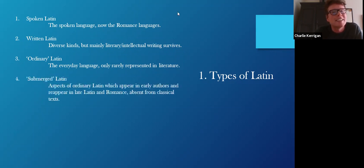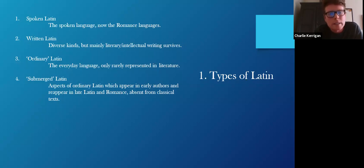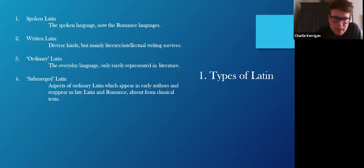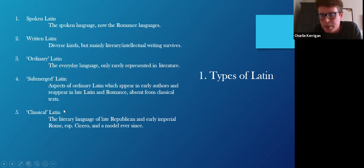'Submerged Latin' is something that scholars talk about — the interesting idea that sometimes Latin words appear in very early authors like the comedian Plautus, are nowhere to be seen in the so-called classical period in Cicero and Virgil and Livy, but then reappear in the Romance languages — French, Spanish, Portuguese. To give one example: the verb 'ascoltare,' meaning to listen or to hear, is in the comedies of Plautus, not found in classical Latin, but it comes into Italian as 'ascoltare.' There is a current of ordinary Latin flowing beneath the literature and reappearing in the Romance languages.